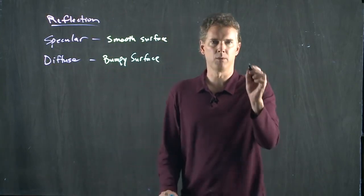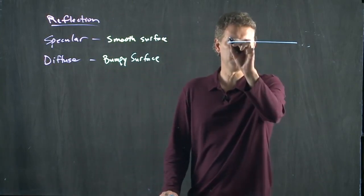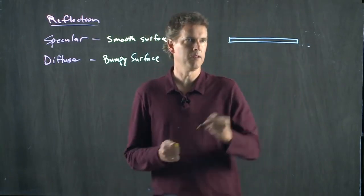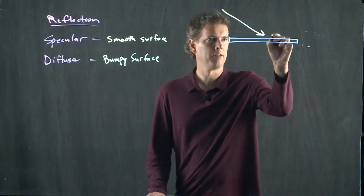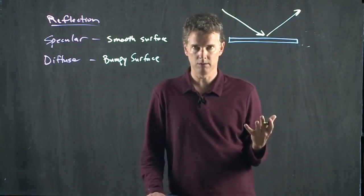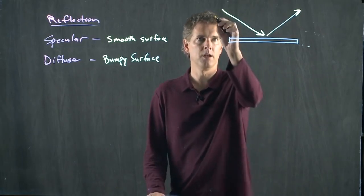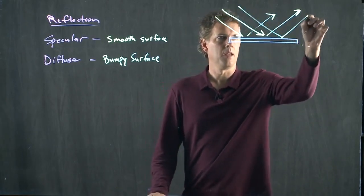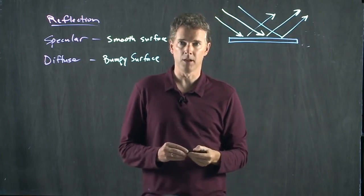So if I think about a specular reflection, the mirror is nice and flat and smooth. All the rays that come in bounce off at a nice angle governed by the law of reflection. There are, of course, many rays that come in, and they all bounce off, obeying the law of reflection.